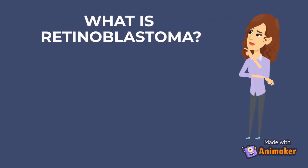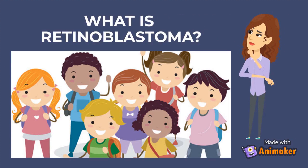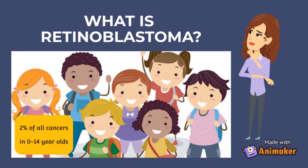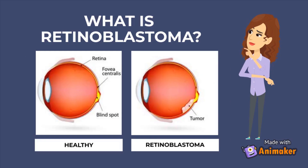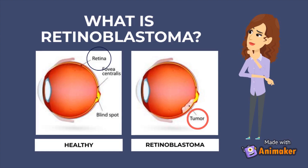Retinoblastoma is a rare type of eye cancer that occurs most often in children under the age of 5. It accounts for approximately 2% of all cancers in children aged 0 to 14 years. Retinoblastoma begins in the retina, a thin layer of tissue that lines the back of the eye and is made up of nerve tissues, which send signals through the optic nerve to the brain to be interpreted as images, thus enabling vision.